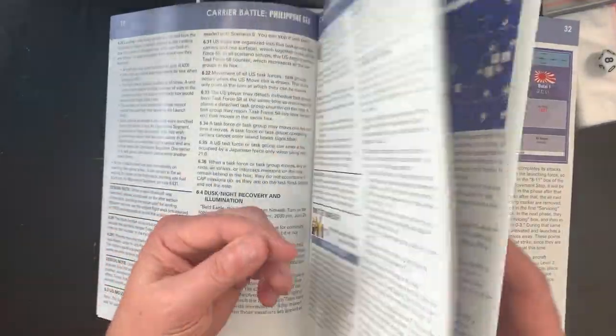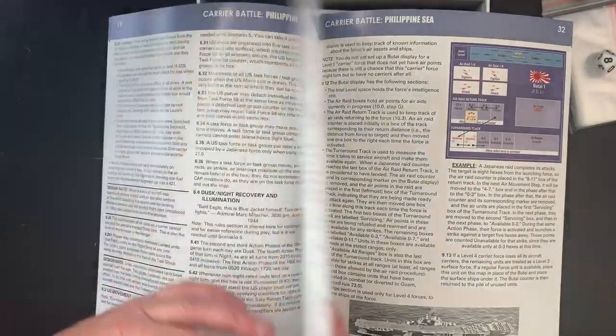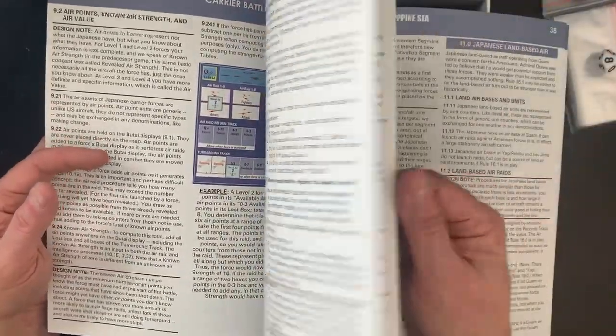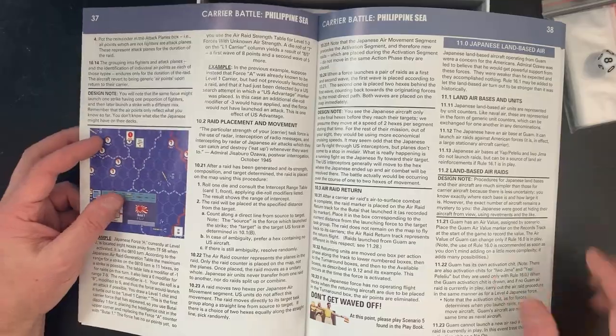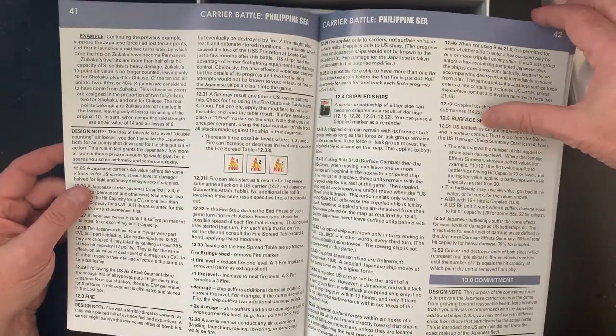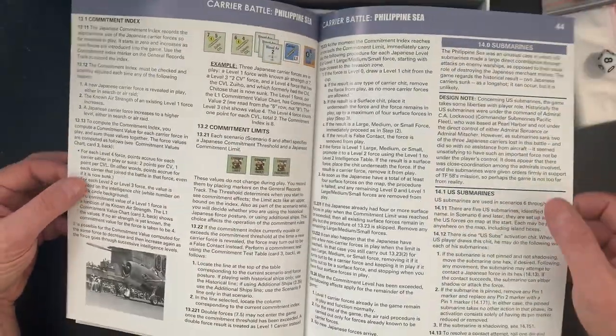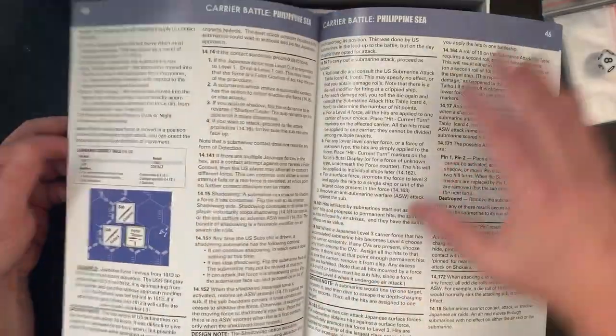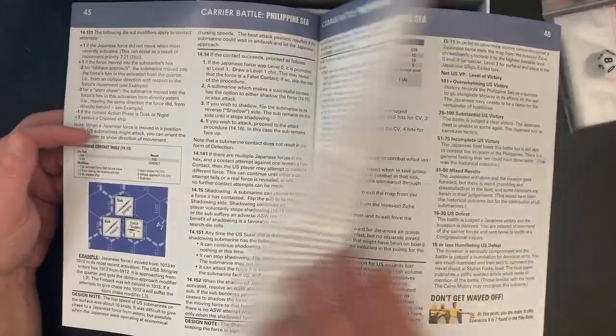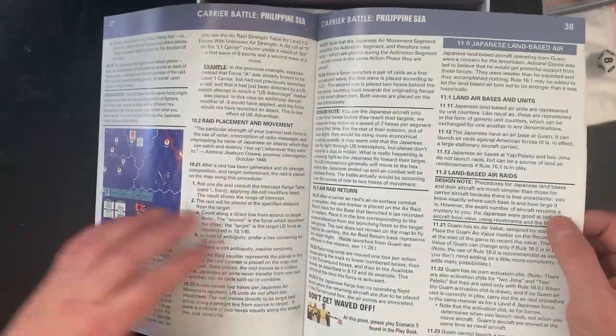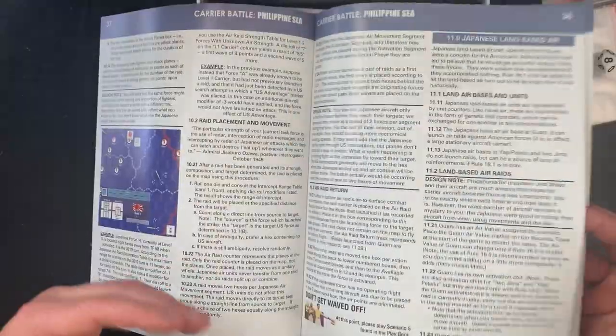Roughly twelve pages to get you from scenario three to scenario four. Japanese carrier forces, so it's getting a little more intense, kind of ratcheting it up. Looks like six pages to get you to scenario five. And the first five are your learning scenarios. I would assume when we get through the rest of this... Submarines. Designer notes. Again, don't get waved off: at this point ready to play scenario six and seven found in the playbook. That gets you from 38 to 48, roughly 10 pages, maybe 11 depending on how you count.